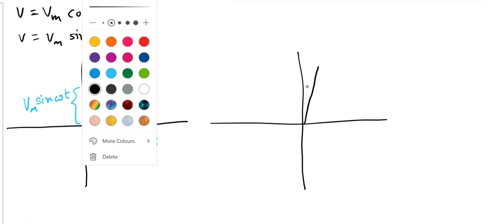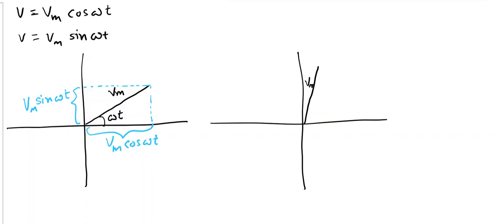As the time proceeds, this angle ωt will increase — as t increases, ωt increases. With a change in ωt, the vertical component Vm sin(ωt) also changes and the horizontal component Vm cos(ωt) also changes. It means that as this vector Vm rotates...